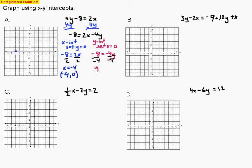So y equals 2. I'll write that answer as an ordered pair: when x was zero, y was 2, so the point is (0, 2). I go ahead and plot that point — over zero, up to 2. Now I've got two points and I can draw my line between those two points, so I just sketch that line. Hopefully I did a better job drawing that line!